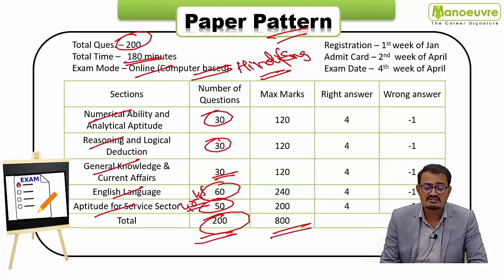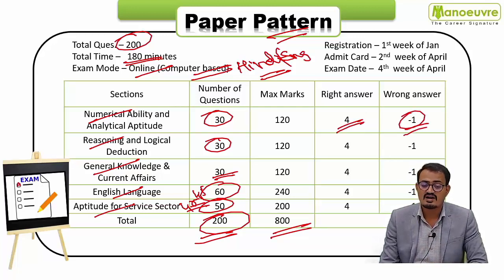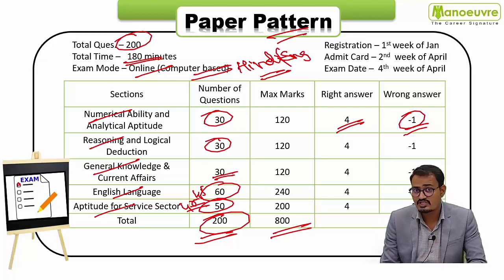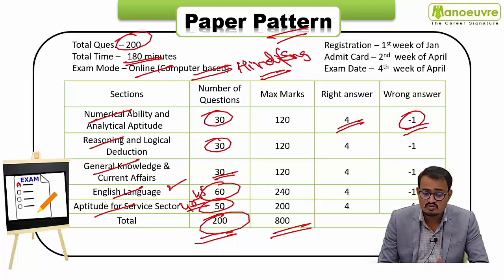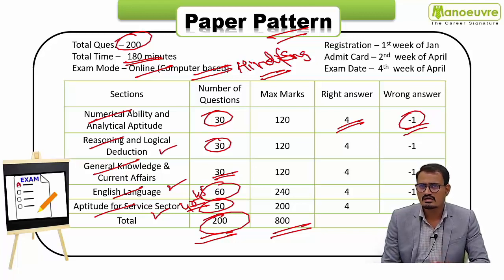For each correct answer you get +4 marks, while for each incorrect answer you lose 1 mark. So with negative marking, be careful while attempting questions. Focus more on the English part, Service Sector, and Logical Reasoning to score more. For Quant, learn shortcut tricks which will definitely help you.